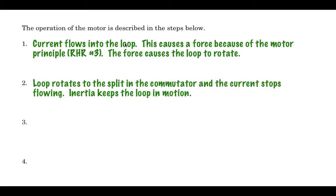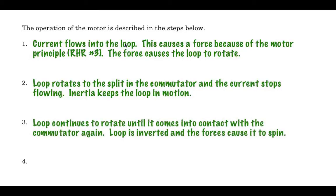And basically, the loop rotates until there's a split in the commutator. Until there's a split in that little ring. It's like two little rings. And the current stops flowing. But because the loop is already rotating, inertia keeps it going.